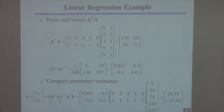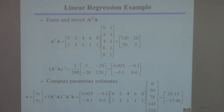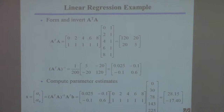Now you implement the least squares solution. First, compute A transposed times A. With five experiments and two unknowns, this will be a two-by-two matrix. Multiplying A transpose by A gives a matrix whose first entry — row times column — is 120, the next entry is 20, and so on.